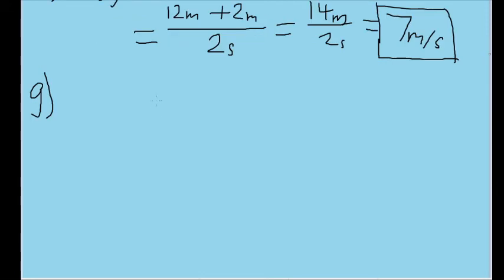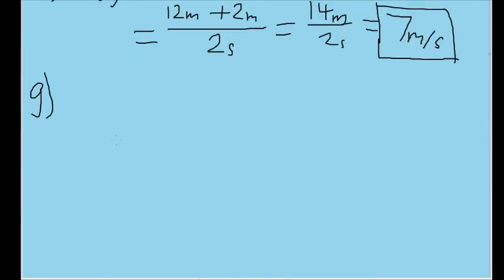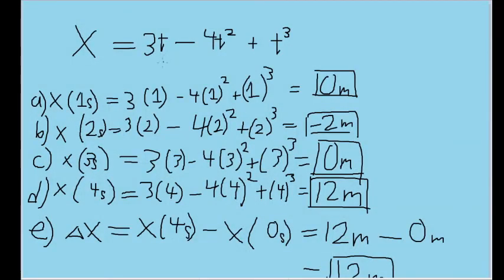For part G, the final part of the problem, we're asked to graph x versus time for an interval of zero to four seconds, and we are supposed to indicate how the answer for part F can be found on said graph. If you have a graphing calculator, this is as easy as plugging in this function in graphing mode, sketching what you see, and adding the other relevant details the problem asks us to include.